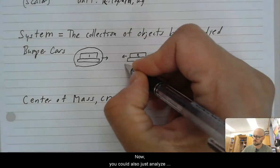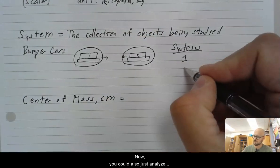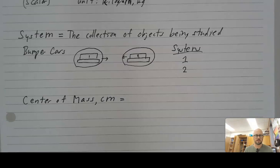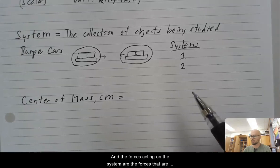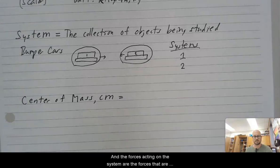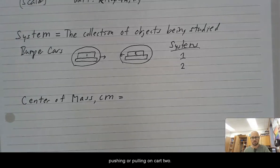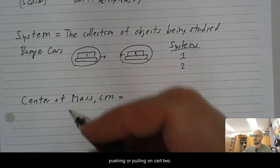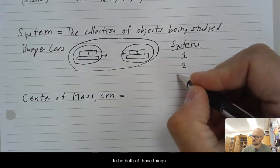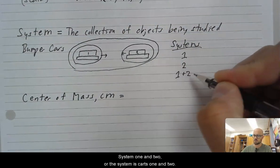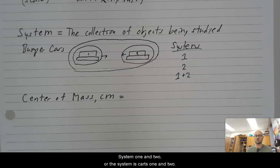Now you could also just analyze bumper car two. And the same thing goes for that. The system's mass is the mass of cart two. And the forces acting on the system are the forces that are pushing or pulling on cart two. But what's interesting is that you can choose your system to be both of those things. System one and two. Or the system is carts one and two.